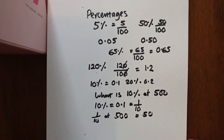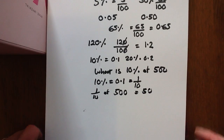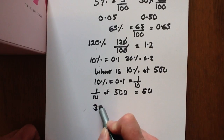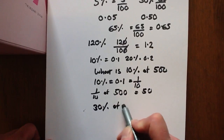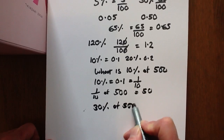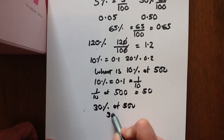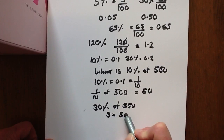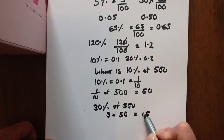Had I asked you what is 30% of 500, then because we know what 10% is, it's simply going to be three times that amount. Three times 50 is 150.